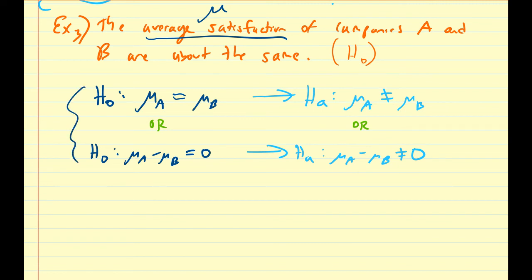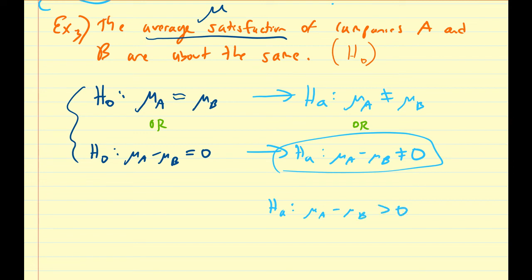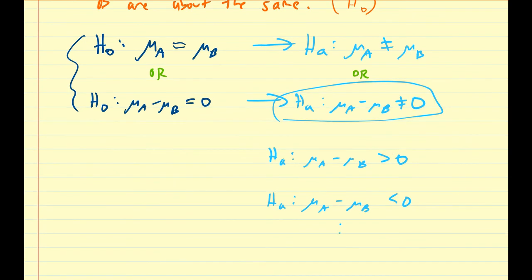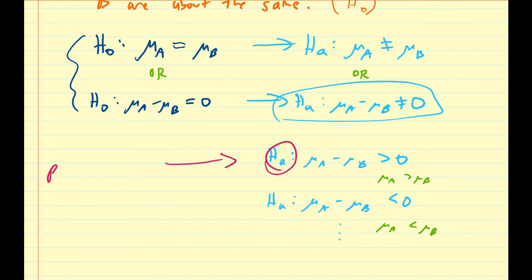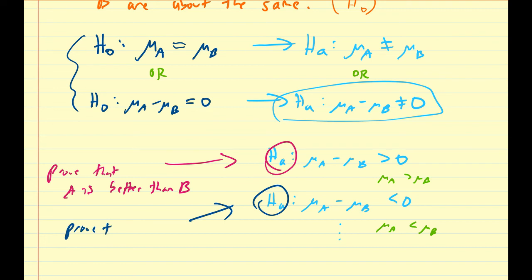We'll discuss the reasons for this formulation in future videos. Other alternative hypotheses include: mu_A minus mu_B is greater than zero, or mu_A minus mu_B is less than zero. If mu_A minus mu_B is greater than zero, that means mu_A must be greater than mu_B — so you're trying to prove that A is better than B. If mu_A minus mu_B is less than zero, that means mu_A is less than mu_B — so you're trying to prove that B is better than A.